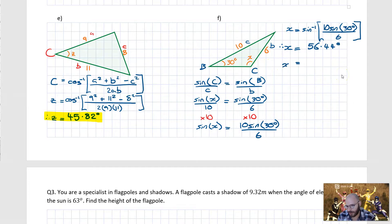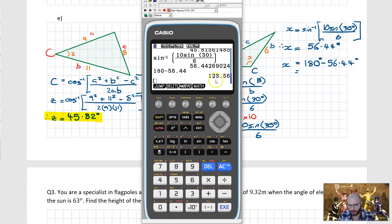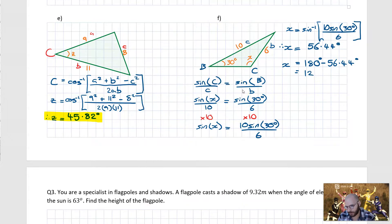So X is equal to 180 minus 56.44. This would come out to be 180 minus 56.44 and that would be 123.56, which matches up with what we'd expect the angle to be in the triangle.